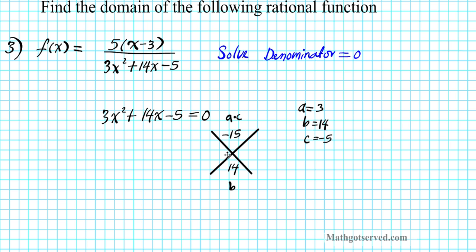The question is: what two numbers multiply to give you negative 15 and add to give you 14? How about 15 and 1? If we want the sum to be positive, the smaller one has to be negative. So: 15 times negative 1 yields negative 15, and 15 minus 1 is 14. Excellent.